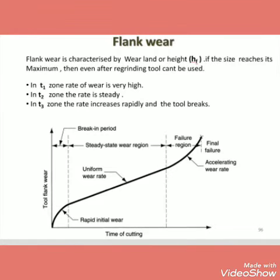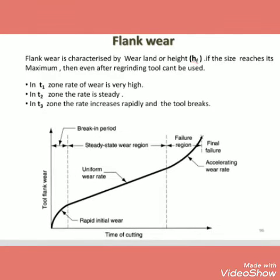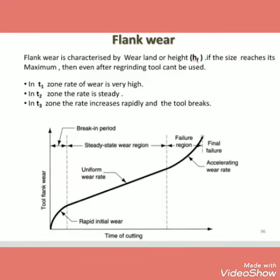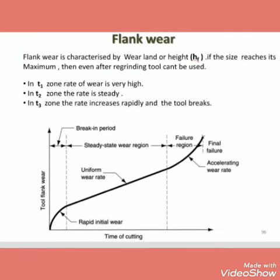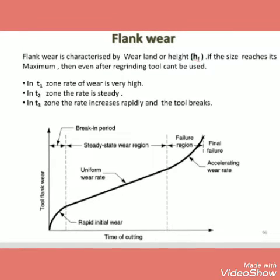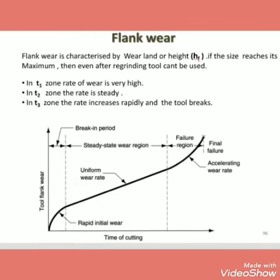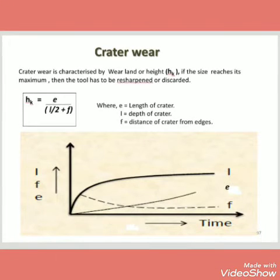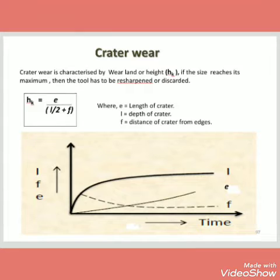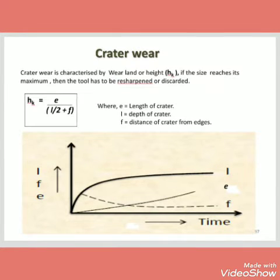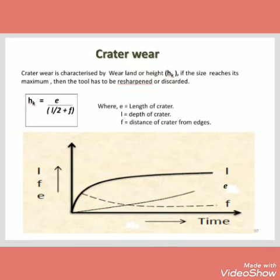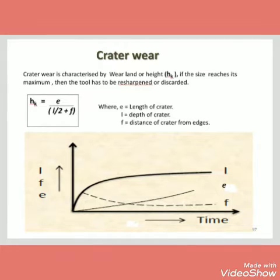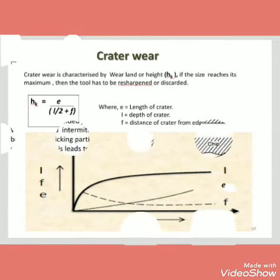Flank wear is characterized by a wear land of height hf. If it reaches its maximum size, the tool cannot be used even after grinding. In the flank wear graph, the vertical axis shows tool flank wear and the horizontal axis shows cutting time; initially there is rapid initial wear. In crater wear, the final equation is H_K = E/L/2 + F, where E equals the length of the crater and L equals the length of the crater.